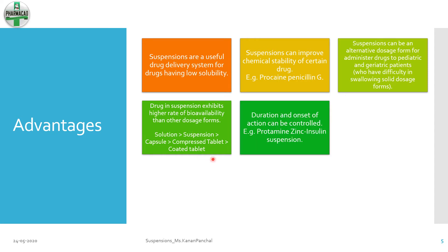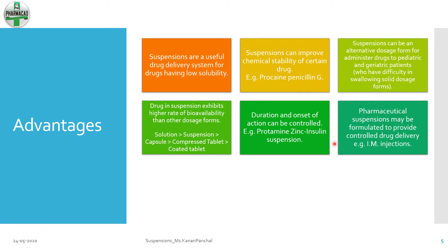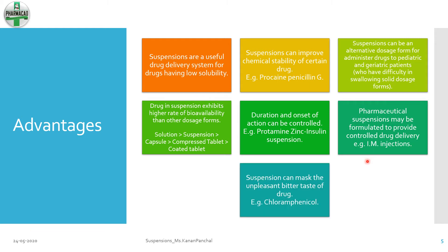We can also control the duration and onset of action of a suspended formulation. Because of that, it is possible for a pharmaceutical suspension to be formulated as a controlled delivery system — for example, intramuscular injection. Suspensions can also mask the unpleasant or bitter taste of certain drugs — for example, chloramphenicol. Please do remember these examples.